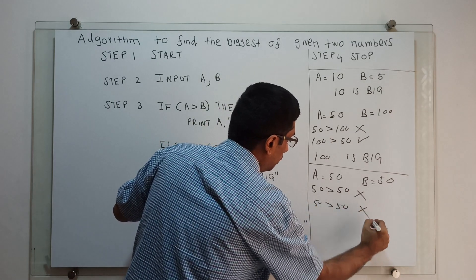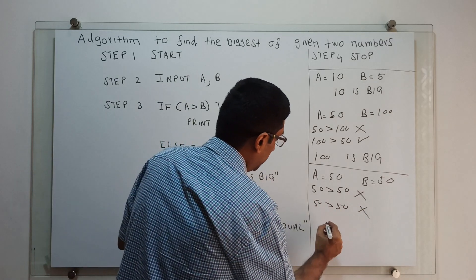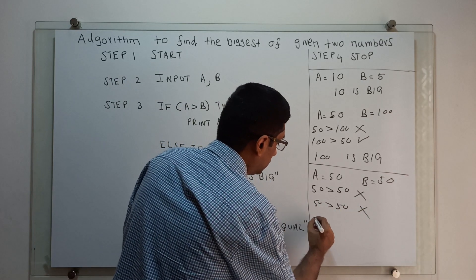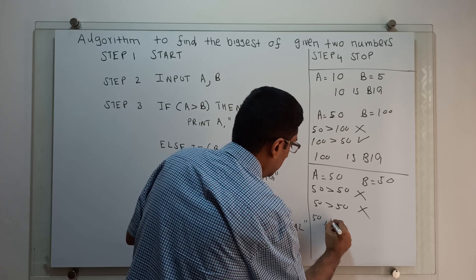greater than 50. This is also false. It will check if A and B are equal. That means 50 and 50 are equal.